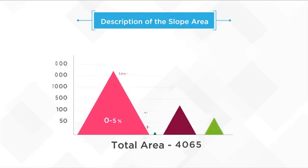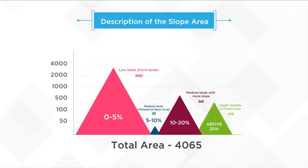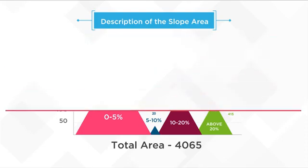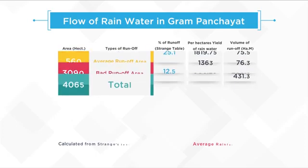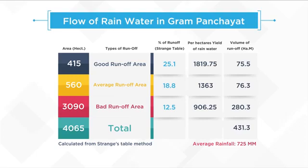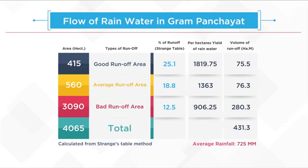The land under Gram Panchayat has been classified on the basis of its slope. According to the watershed approach, selection and implementation of works are planned in order from ridges to the valley area, so understanding about slope is very important. The amount of runoff in an area during one year is calculated by Strange's table method, with the volume of runoff calculated according to the average rainfall and slope of a specific area. Appropriate activities are then selected for the storage and management of this runoff.